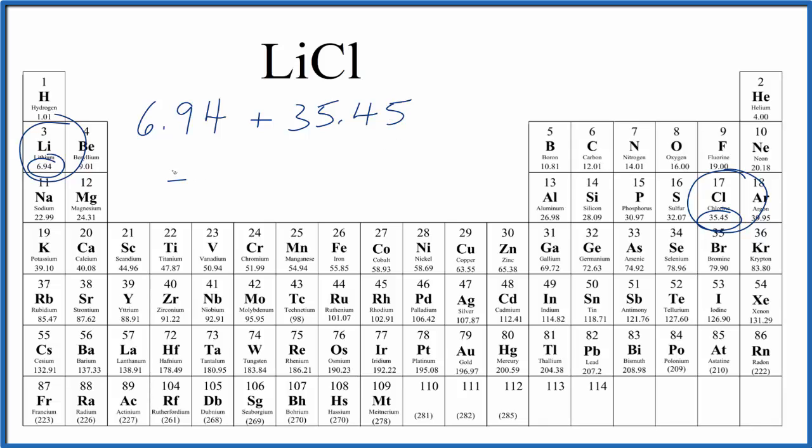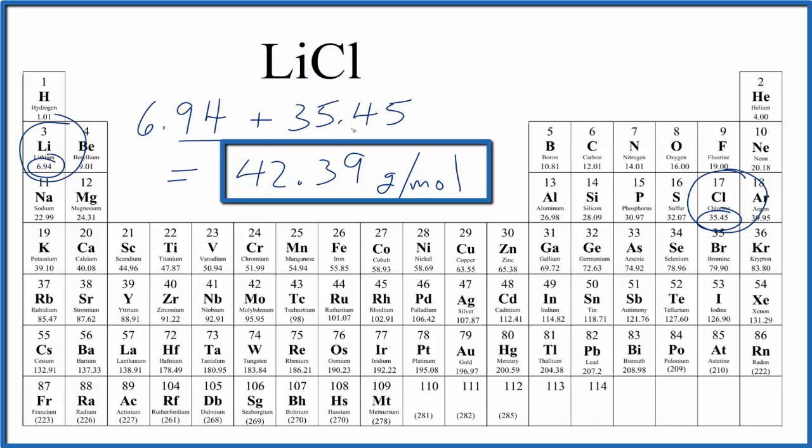So when we add these two numbers together, we end up with 42.39, and now we add in the grams per mole. My periodic table rounds to two decimal places. If your periodic table is different, you might get a slightly different answer here.